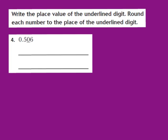Now let's take a look at question number 4. My job is to write the place value of the underlined digit and then round each number to the place of the underlined digit. The decimal number given is 506 thousandths. Behind my decimal, I know the tenths place has the 5, then the hundredths place, then the thousandths place. So my 0 is my underlined digit, which means that 0 is in the hundredths place. So I'm going to write down that my 0 is in the hundredths place, meaning I'll be rounding this decimal number to the hundredths place.